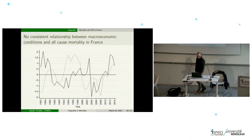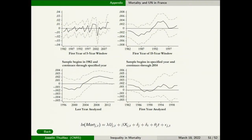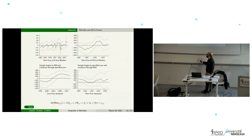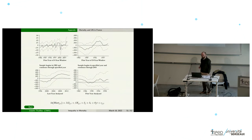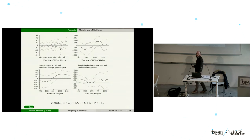We find absolutely no relationship when we regress log mortality on unemployment across a number of specifications and time windows — we nearly never find significant coefficients. This means the relationship between macroeconomic cycles and mortality is probably not pro-cyclical in France, and there is a weak association between macroeconomic activity and health in general. The trend suggests the effect of unemployment on mortality was probably negative before and became basically positive — a trend observed much more significantly in the US, but not significant in France.